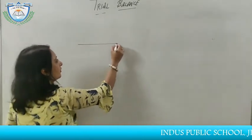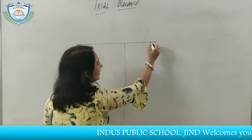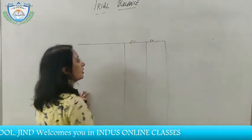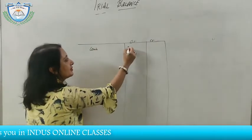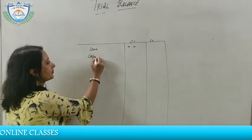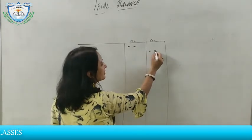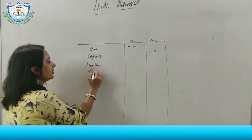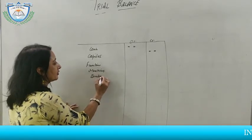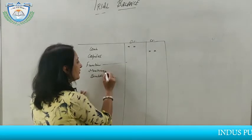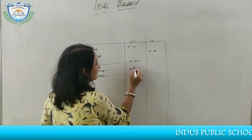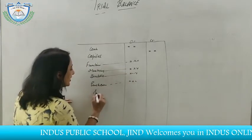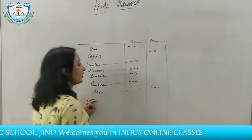Now let's understand which accounts have debit balances and which have credit balances. Cash account always has a debit balance. Capital is a liability — it has a credit balance. Assets like furniture, machinery, and building always have a debit balance. Purchases also have a debit balance. Sales have a credit balance.